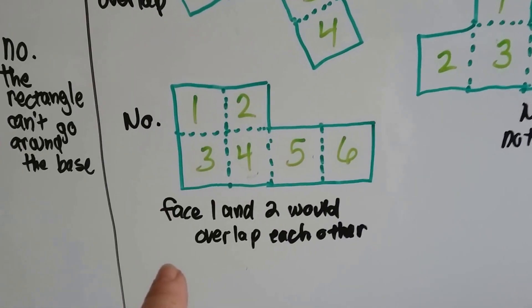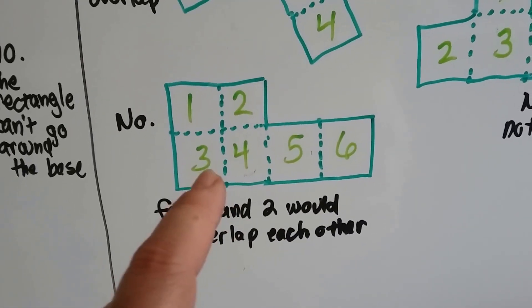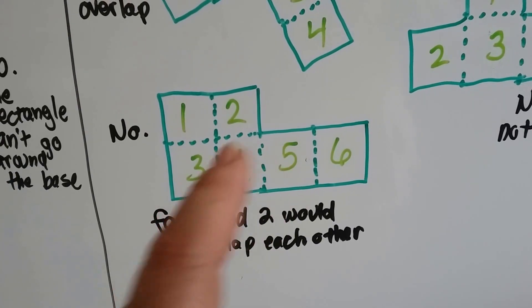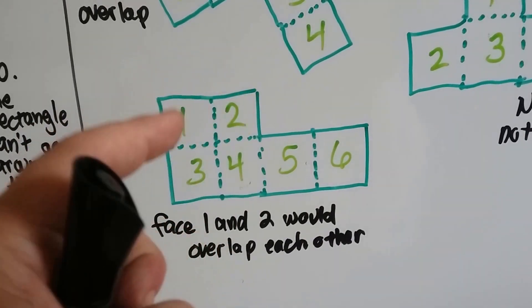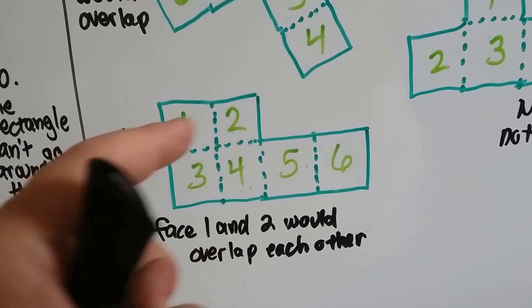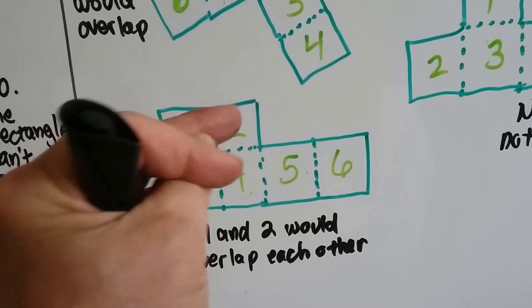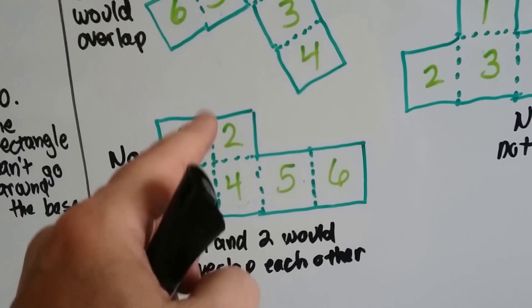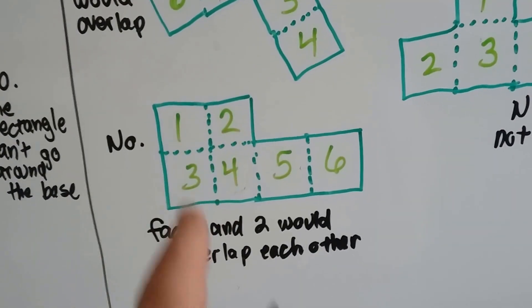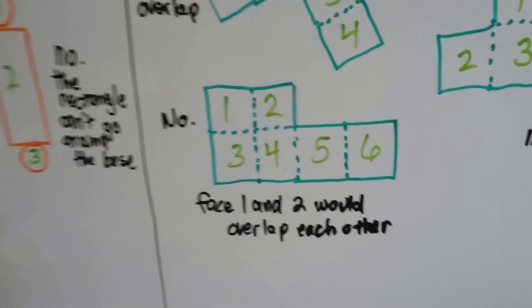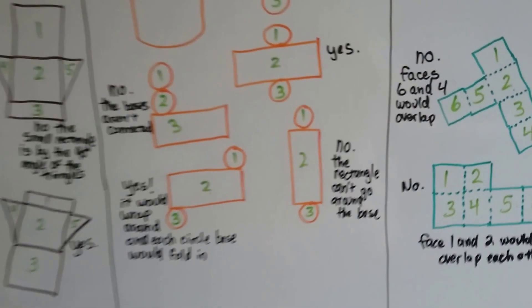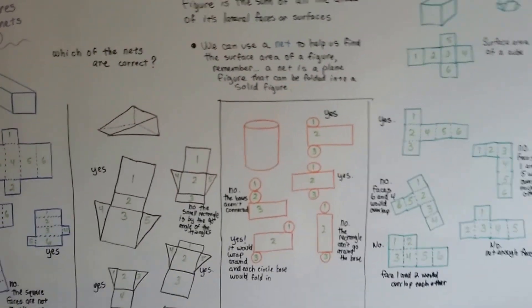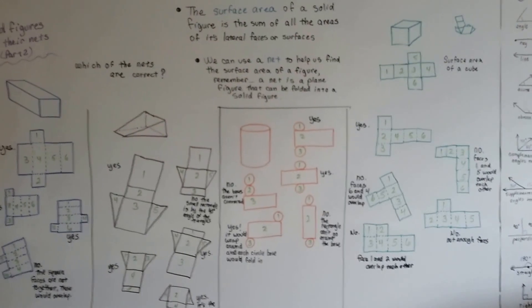What about this one? Would this work? If we folded number three and number four up, these two would actually turn into triangles. They would fold in on themselves and turn into triangles to try to fold here. And they would overlap each other. So no, that one wouldn't work either. So you'd be very careful when you're looking at a net and imagining what it would look like folded up.